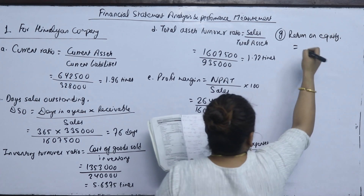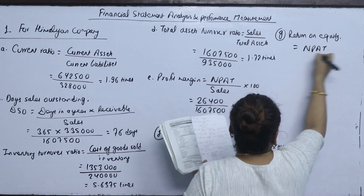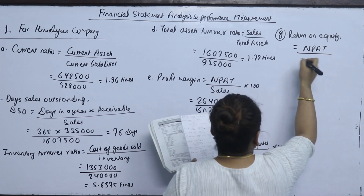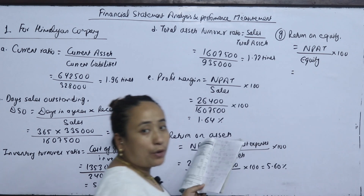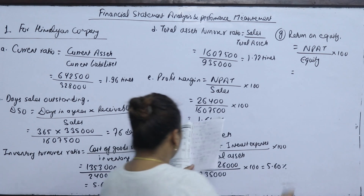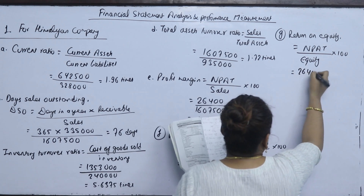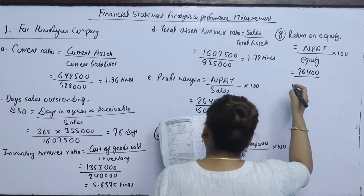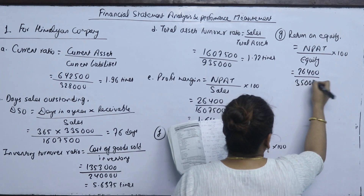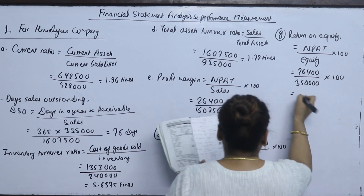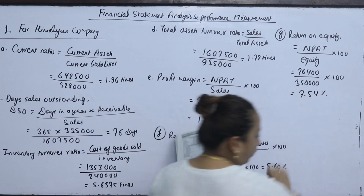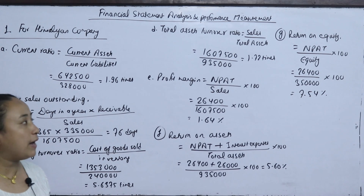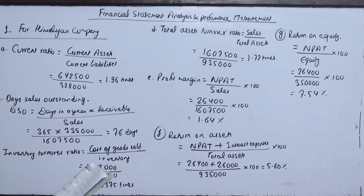Return on equity is net profit after tax divided by equity, multiplied by 100. Net income from the income statement is 26,000 divided by equity of 3,50,000 into 100. Return on equity is 7.54%.